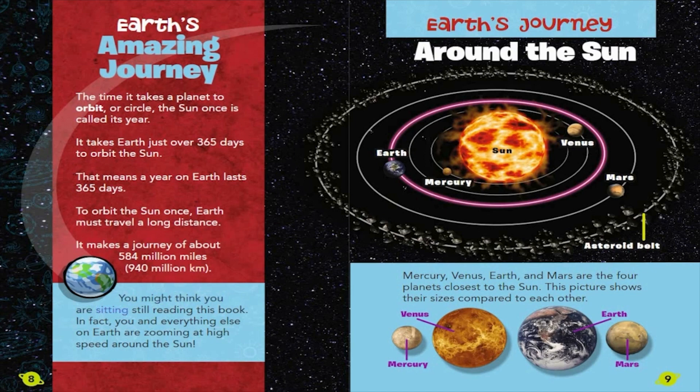You might think you are sitting still reading this book. In fact, you and everything else on Earth are zooming at high speed around the Sun. Mercury, Venus, Earth, and Mars are the four planets closest to the Sun. This picture shows their sizes compared to each other.